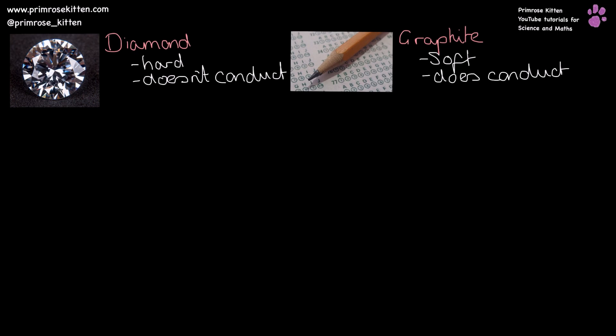Diamond and graphite are two very different things with very different properties. Diamond is hard and doesn't conduct, whereas graphite is soft and does conduct. But they have one very important, fundamental thing in common: they are both made of pure carbon, and they are both giant covalent structures. But because of the bonding within them, they're going to have very different properties.